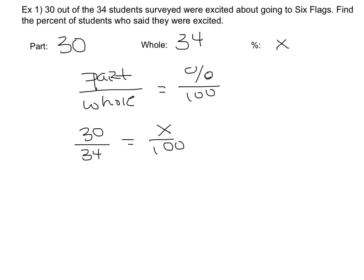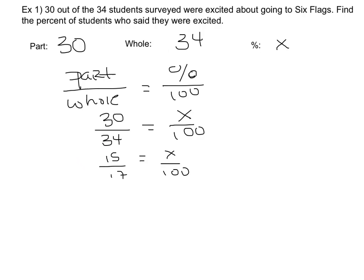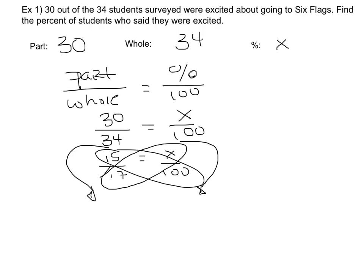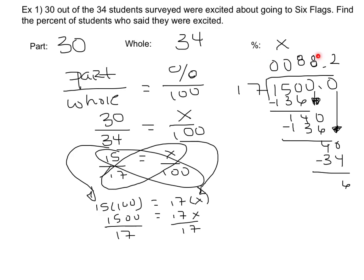Before you solve cross products, you always have the option of simplifying any of your fractions. In this case, if I want to simplify 30 over 34 before finding the cross products, I can, and a lot of times that's going to be easier. Now I can just solve using my cross products — taking the numerator of one fraction times the denominator of the other, set equal to the denominator of one fraction times the numerator of the other. Simplifying both sides and dividing both sides by 17, for percents you really do want to find the decimal value. You can see on the right side where I did my long division, and I'm left with 88.2 equals X — so 88.2% of the students were excited to go to Six Flags.